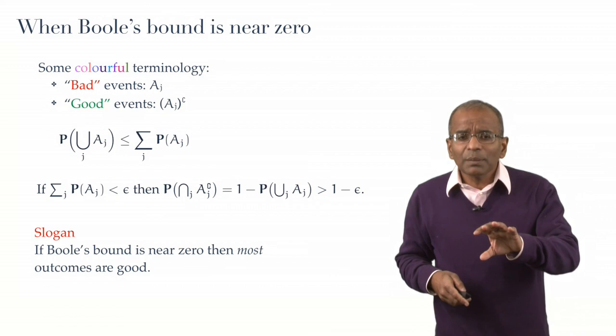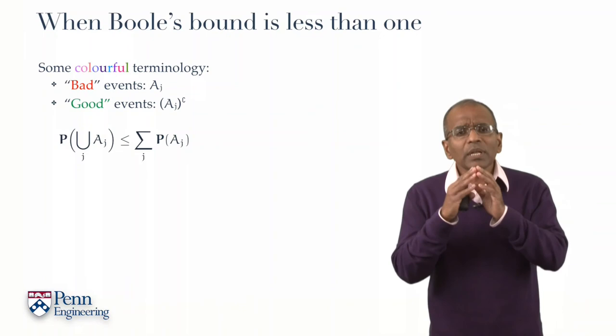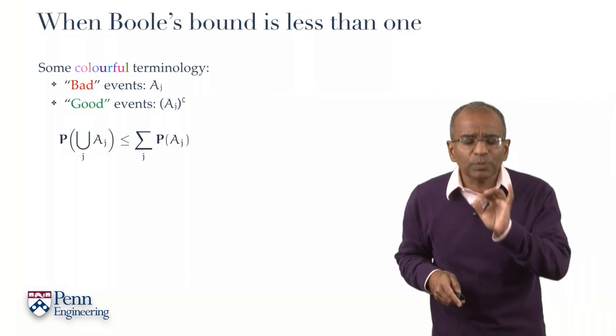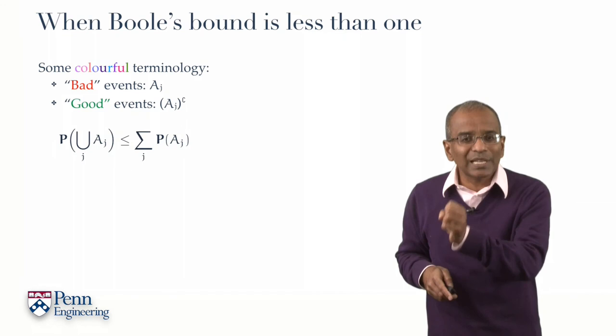What if the bound is not near zero? What can we say now? Well, let's suppose that Boole's bound is potentially quite large, but less than one. In that case, what can we possibly conclude? Well, if the right-hand side is less than one, then manifestly so is the left-hand side.